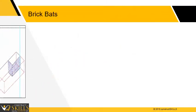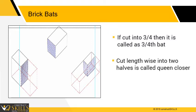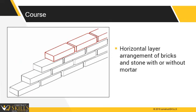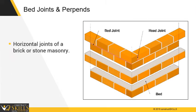King Closer: a triangular portion cut to fit in a corner portion of a wall to make a proper joint. Brick Bats: if the brick is cut into three quarters, it is called a three quarters bat. If the brick is cut lengthwise into two halves, it is called a queen closer, and again cut in two halves it is known as a one quarter brick. Course: horizontal arrangement of bricks and stone with or without mortar.